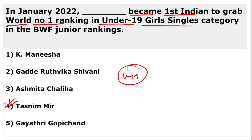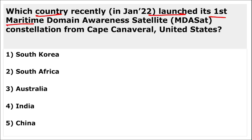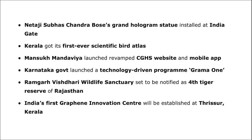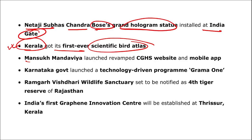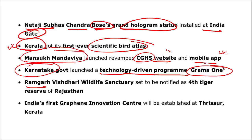South Africa recently launched its first maritime domain awareness satellite constellation from Cape Canaveral, USA. A grand hologram statue of Netaji Subhas Chandra Bose was installed at India Gate. Kerala received its first ever scientific bird atlas. Mansukh Mandaviya launched the CGHS website and mobile app. A technology-driven programme called 'Gramavan' was launched by the Karnataka government.